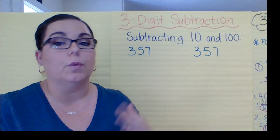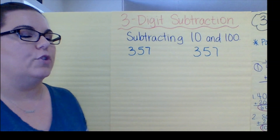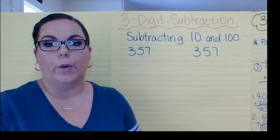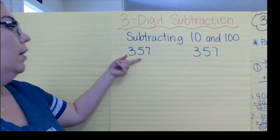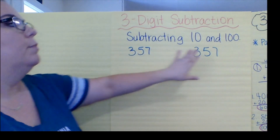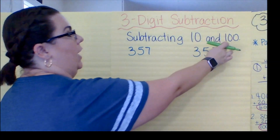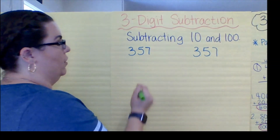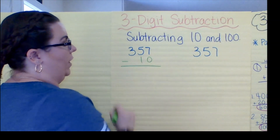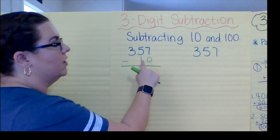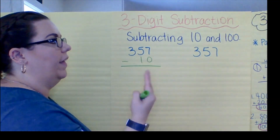Let's get started with a few examples — it's going to be a short video, just real quick to show the steps. When we start with any three-digit number, I have 357 here — yes, I have it twice, you'll see why in a moment. We're going to subtract 10 and 100. If I subtract 10 from 357, I have to line up the ones and the tens where they go in the correct place.